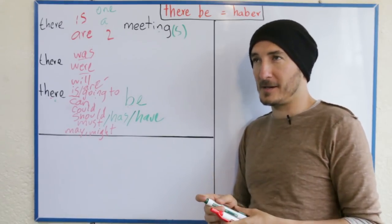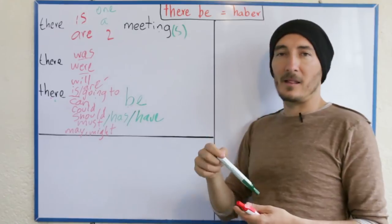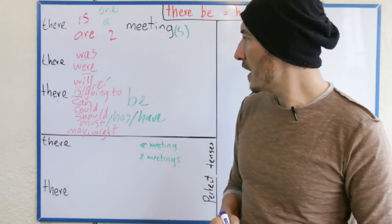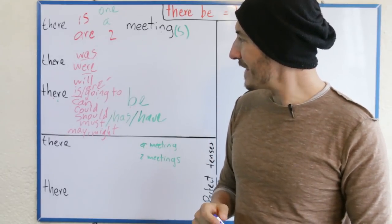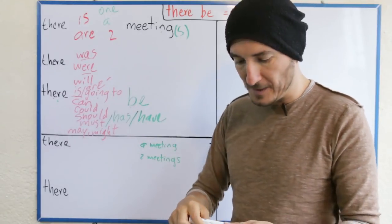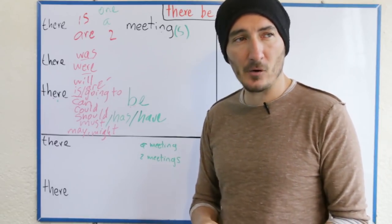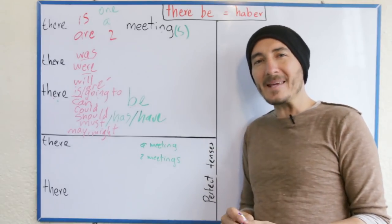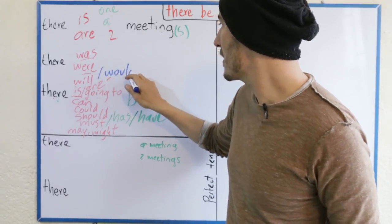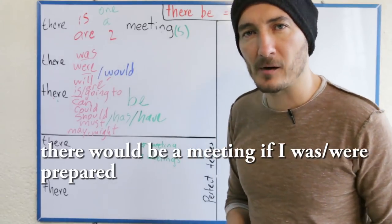Uno cree que en esto todo es 'there is, there are, there was, there were' y ya se acaba. El 'there be', el 'there is' es mucho más que eso. Nos falta una posible conjugación antes de pasar a los perfectos: el condicional. Si 'there will be' es 'habrá una reunión' — there will be a meeting, there will be two meetings — ¿cómo se diría 'habría dos reuniones si tal cosa'? 'Habría' usa el 'would' en vez del 'will'. There would be a meeting if I was prepared — o if I were prepared, recuerden el subjuntivo.